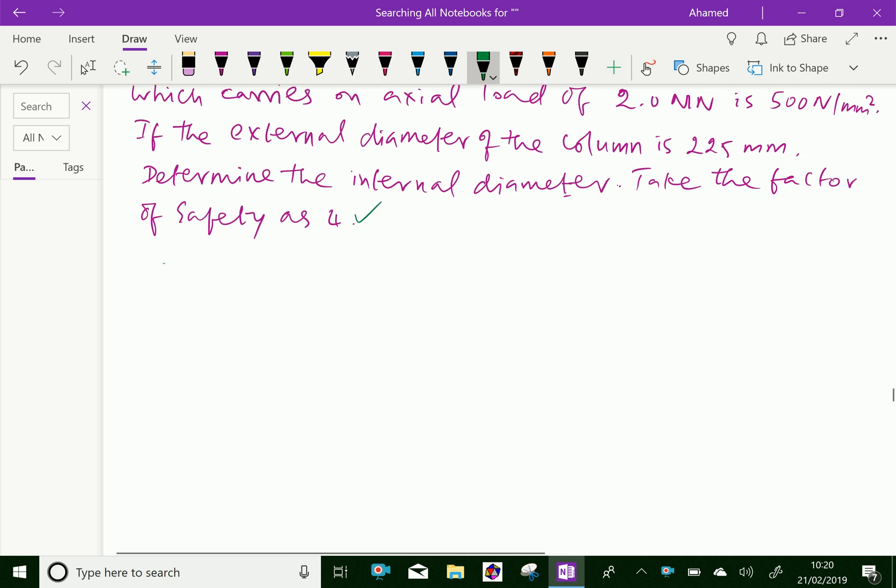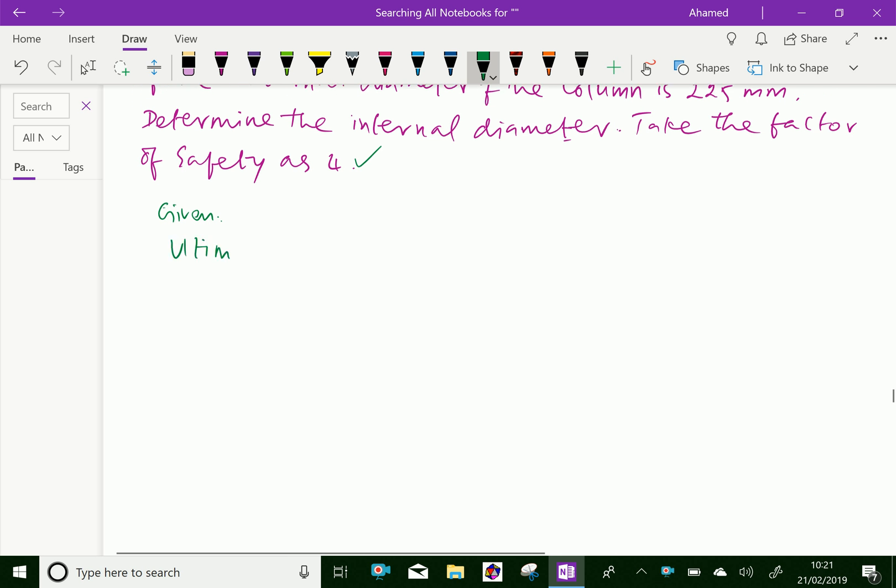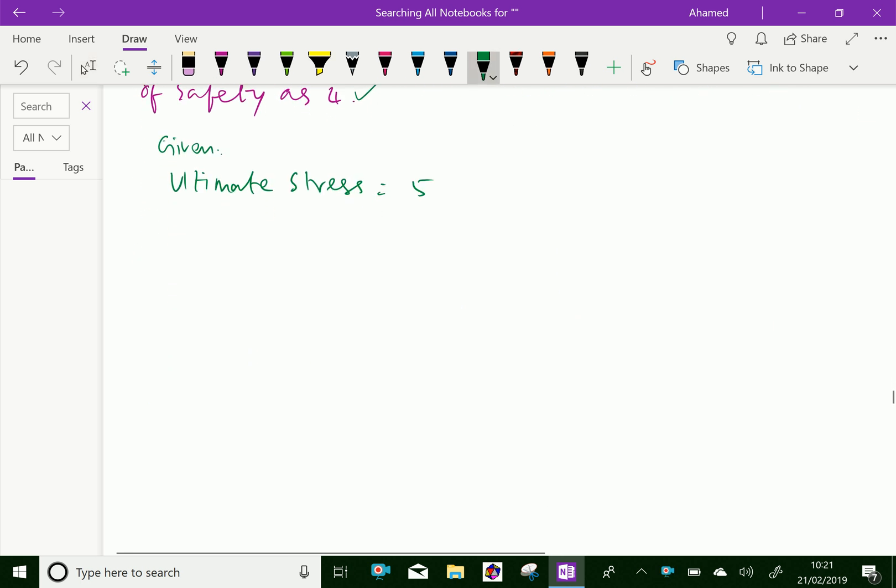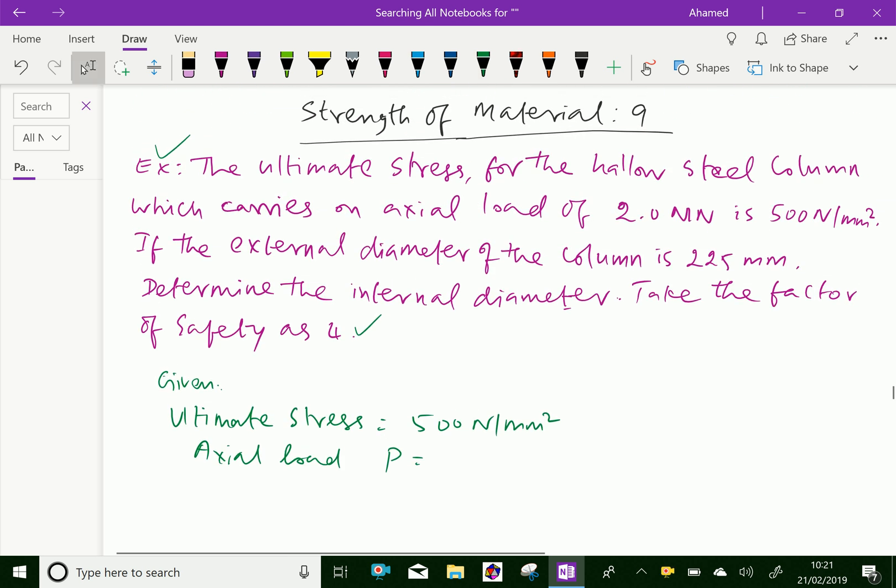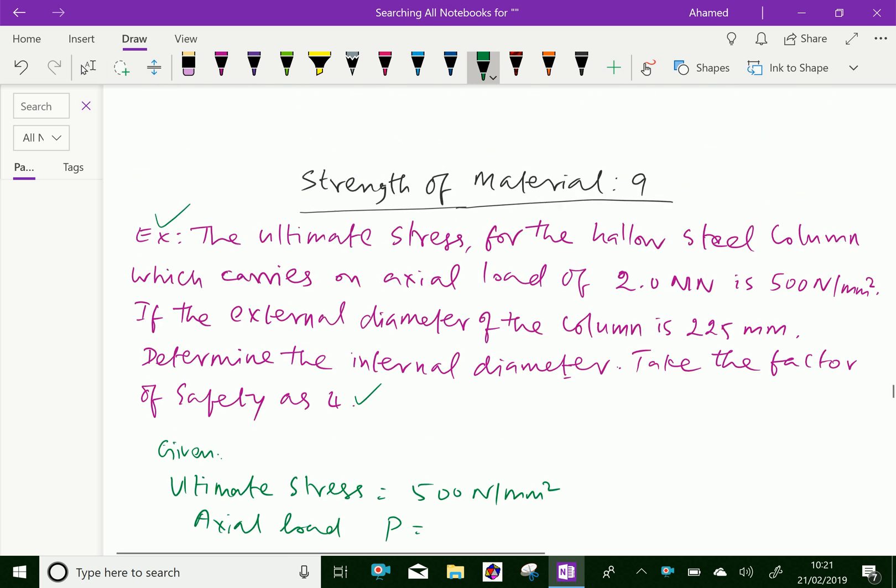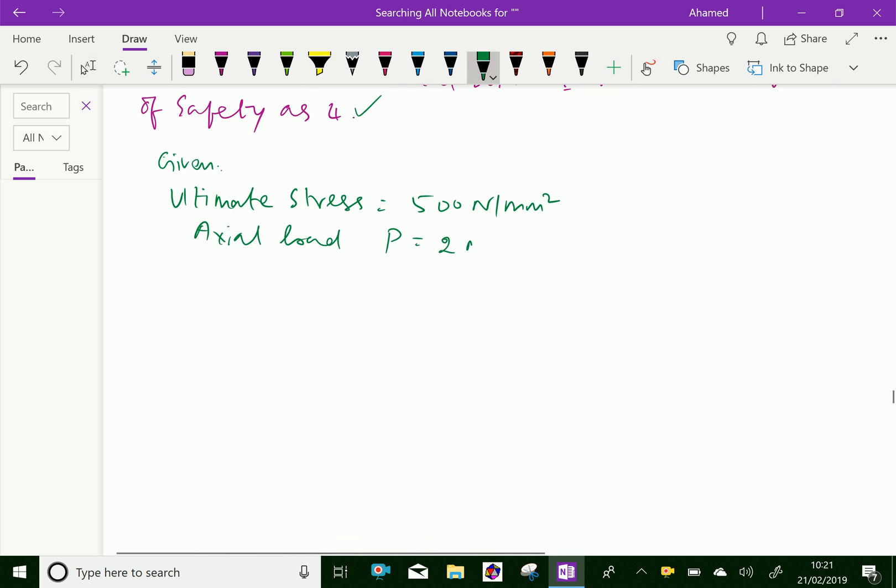Now given: ultimate stress equal to 500 newton per mm squared. Axial load, that is P, equal to 2 mega newton, which is equal to 2 into 10 power 6 newton.